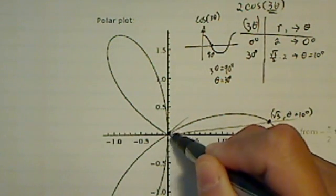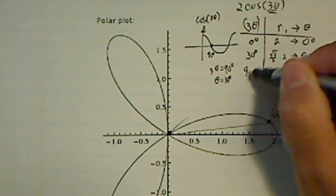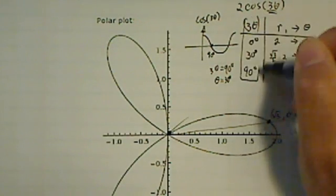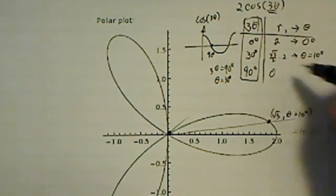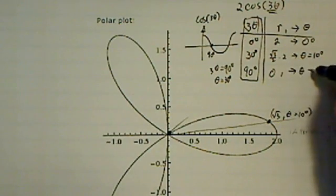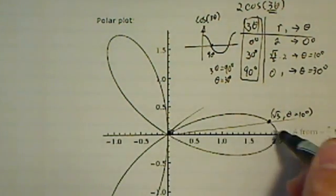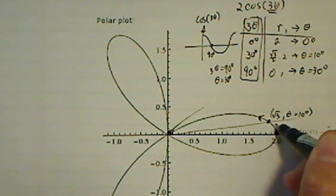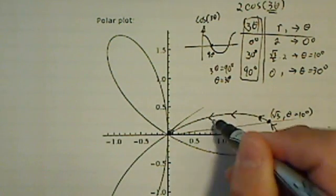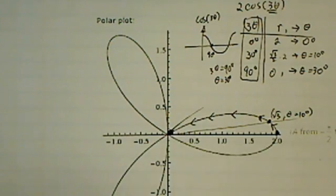Okay, now when you get theta equal to 30 degrees, here's 90. 3 theta is 90 degrees, and then r equal to 0, which means theta equal to 30 degrees. So this is the first 0. So as we started over here, the curve started moving this way, all the way when theta equal to 0.